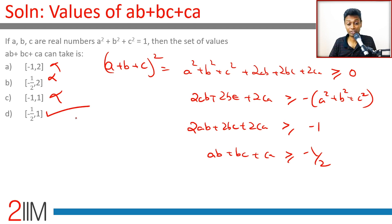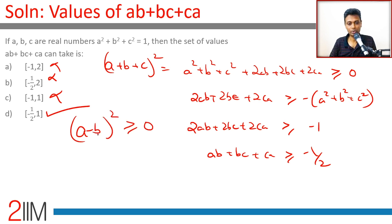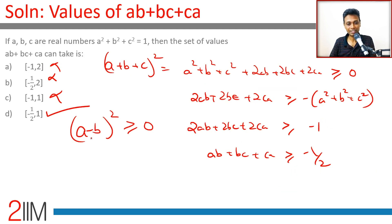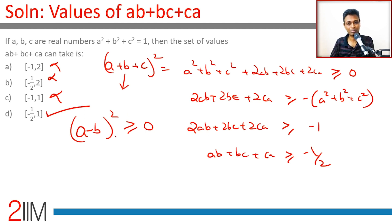Whenever you're dealing with inequalities of these expressions, you look at (a - b)² ≥ 0 or (a + b)² ≥ 0 or (a + b + c)² ≥ 0. The key principle is that a perfect square cannot be negative — that's going to be the bedrock for a whole bunch of these inequality problems.